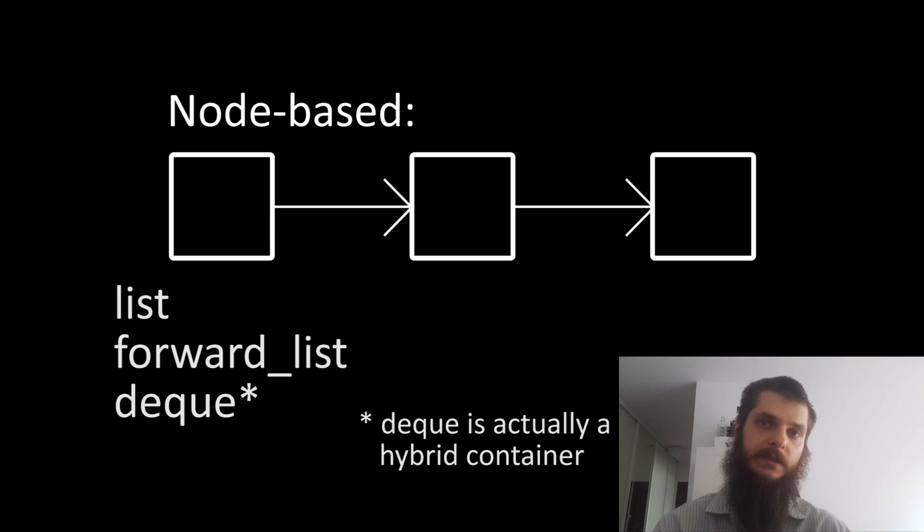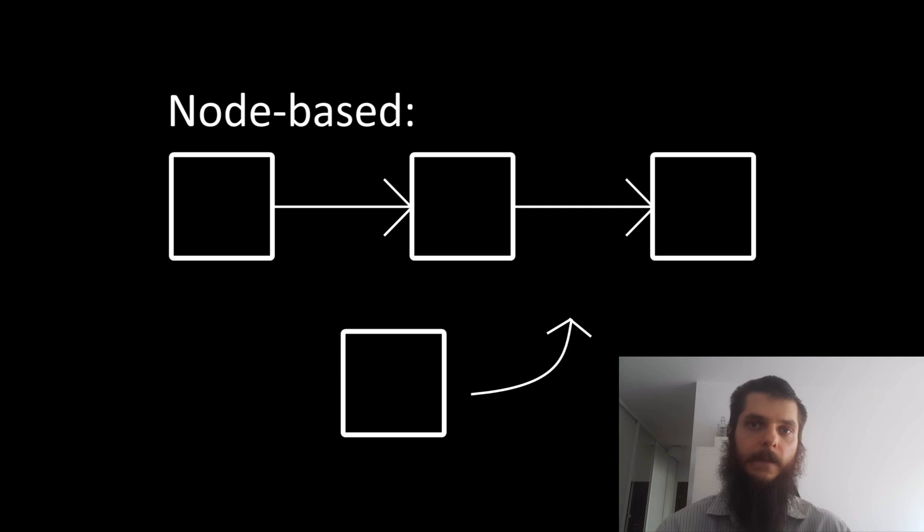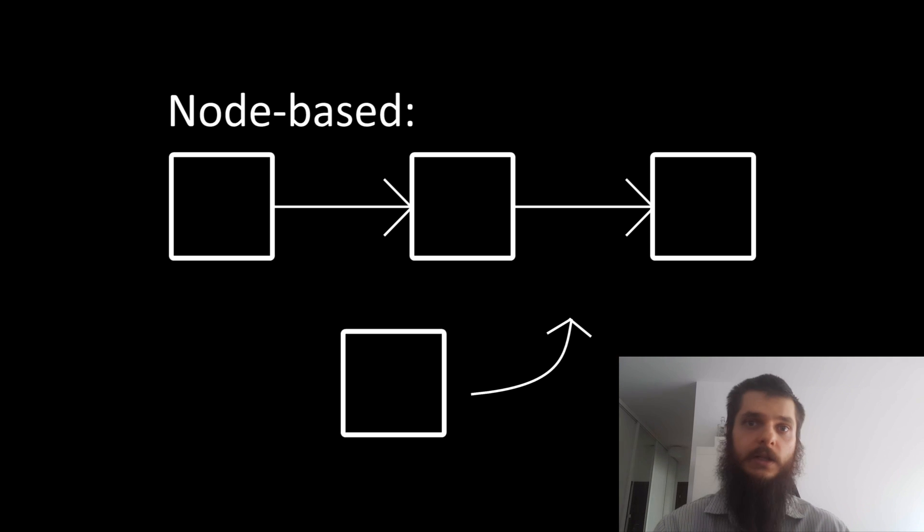If you do not need fast iteration or fast random element access, you should think about insertions and removals. Do you plan on doing a lot of insertions or removals, and at what positions? Insertions in continuous memory containers like a vector can be really slow. Therefore we have another type: a node-based container like a list, forward list, or deque. If you plan to insert elements at the beginning or at the end, you should consider a deque. A deque — short for double-ended queue — is optimized for insertions and removals at both ends. But if you wish to insert or remove at any position inside very fast, consider a list.